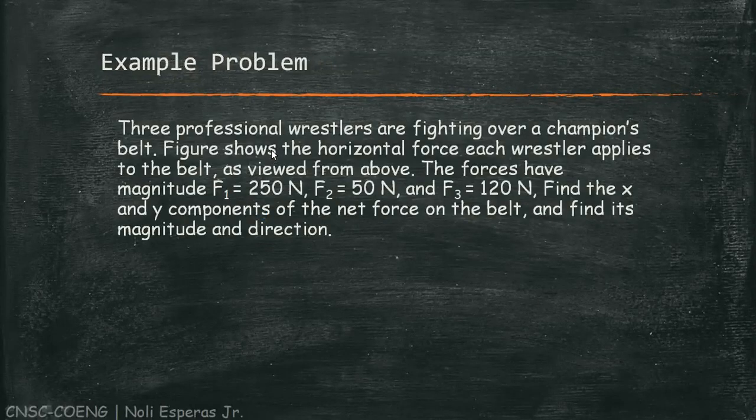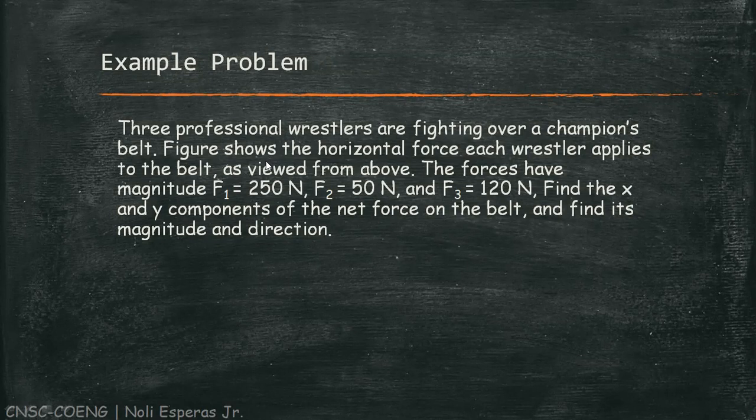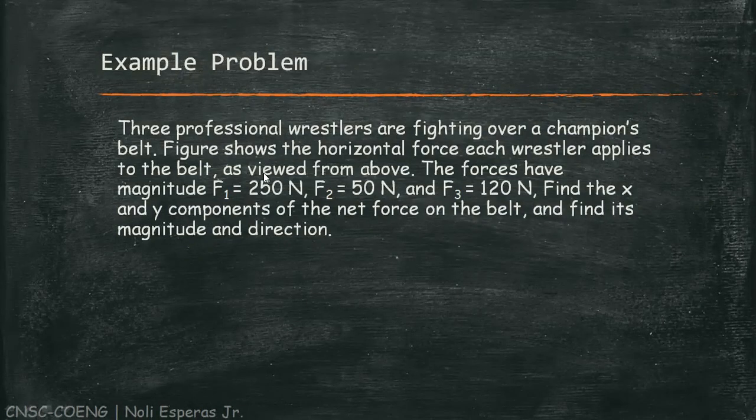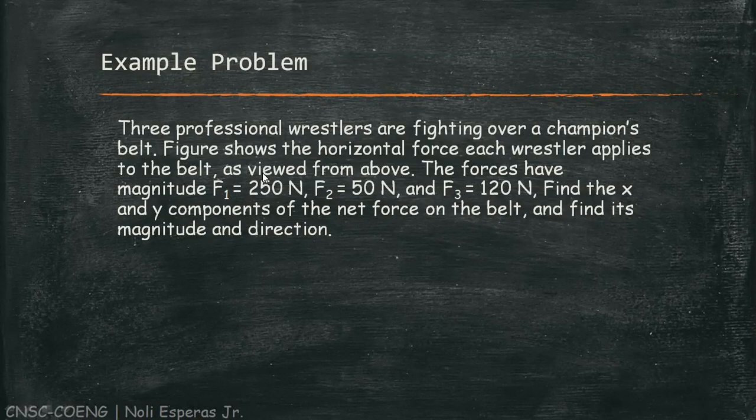For our example, we have three professional wrestlers fighting over a champion's belt. The figure shows the horizontal force each wrestler applies to the belt as viewed from above. The forces have magnitude F1 = 250 N, F2 = 50 N, and F3 = 120 N. Find the x and y components of the net force on the belt and find its magnitude and direction.